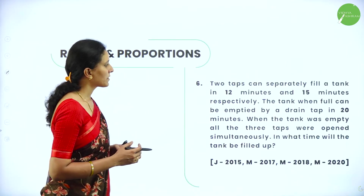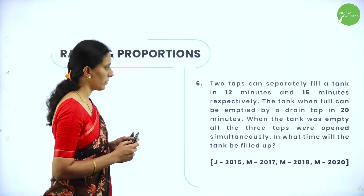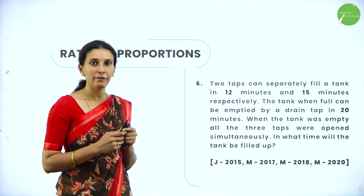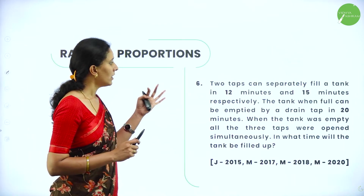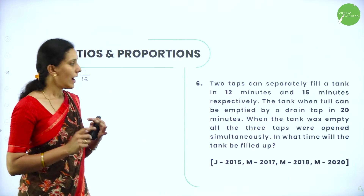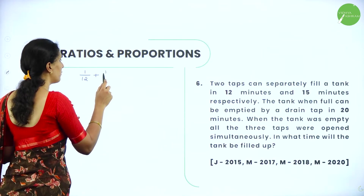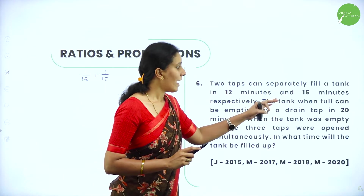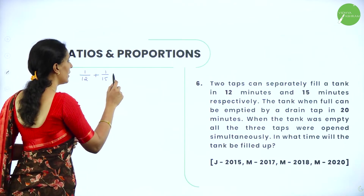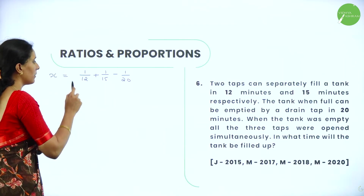Next: 2 taps can separately fill a tank in 12 minutes and 15 minutes respectively. The tank when full can be emptied by a drain in 20 minutes. The tank was empty and all 3 taps are opened simultaneously — in what time will the tank be filled? If tap 1 takes 12 minutes, it fills 1 by 12th per minute. Tap 2 takes 15 minutes, filling 1 by 15th per minute. The drain takes 20 minutes to empty, so it empties 1 by 20th per minute. The total work per minute is 1 by 12 plus 1 by 15 minus 1 by 20.